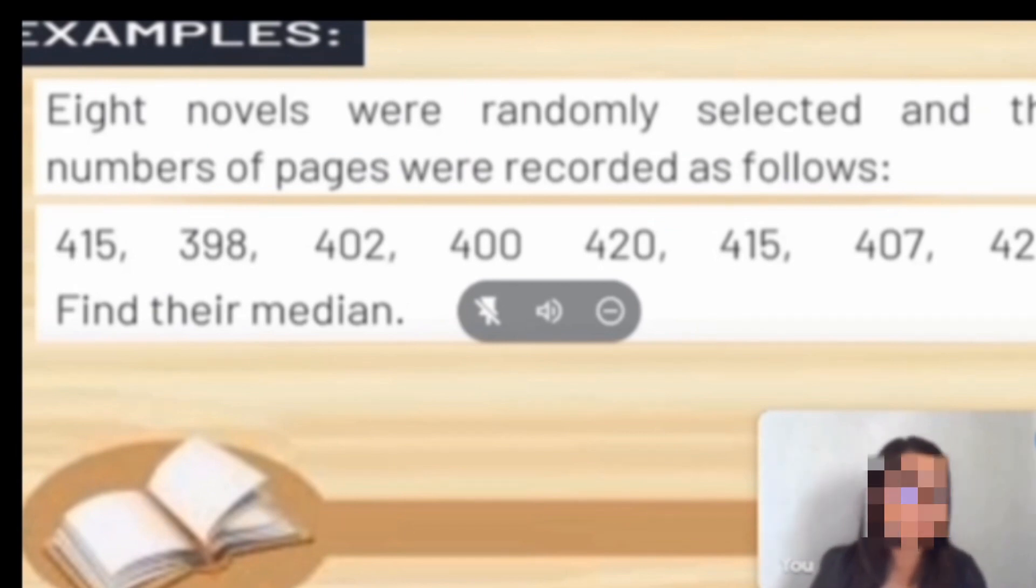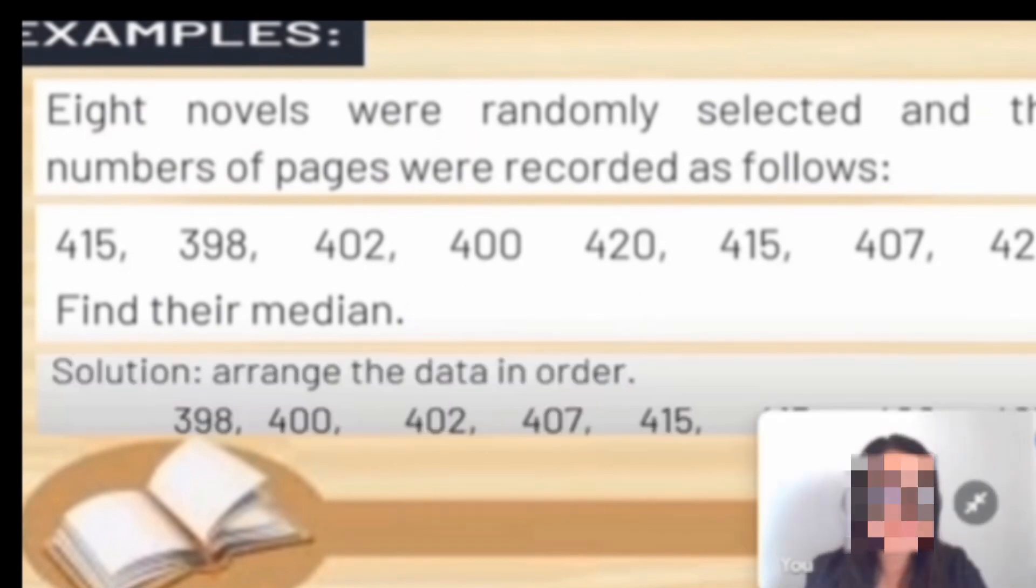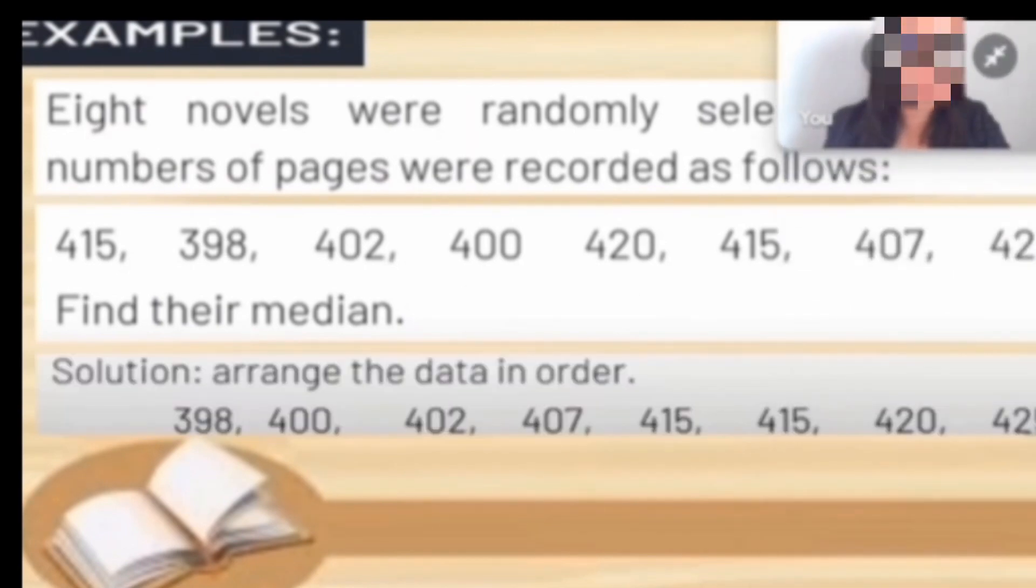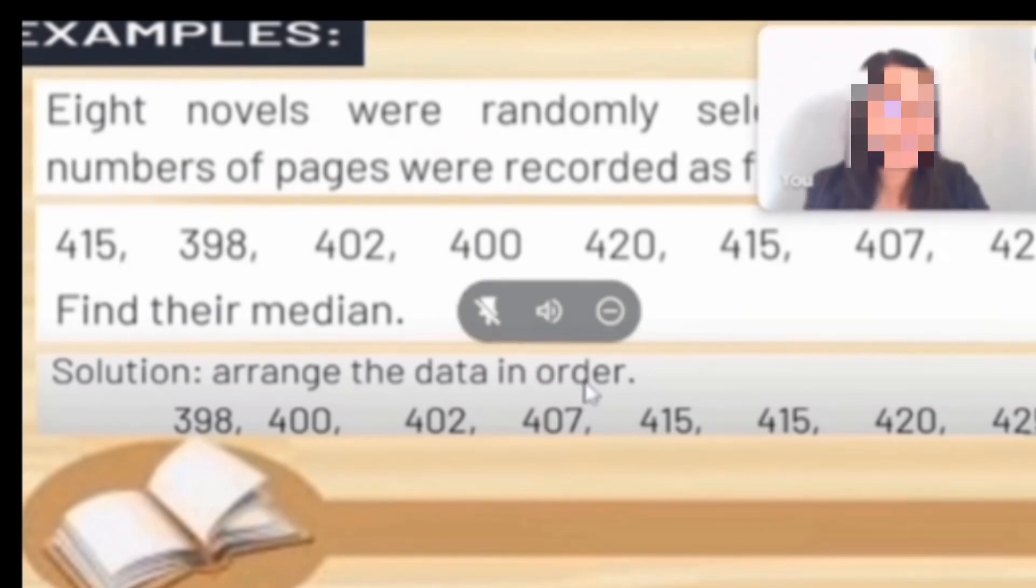Eight novels were randomly selected and the numbers of pages were recorded as follows. We have 8 numbers. Find their median. First step, we need to arrange the numbers in ascending order or descending order. Our lowest number is 398 and our highest number is 425.